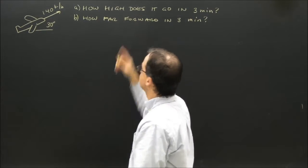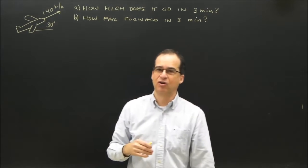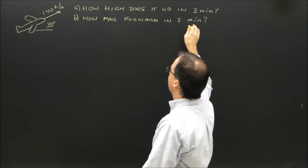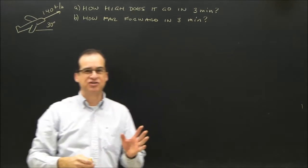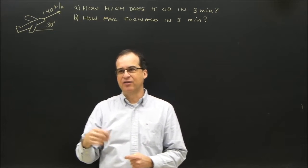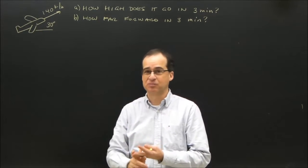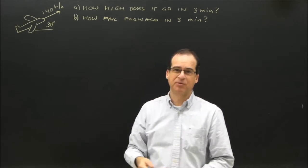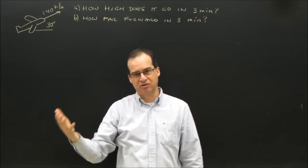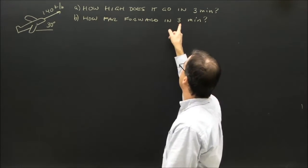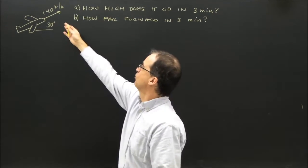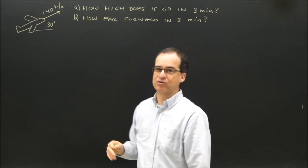The question is: how high does it go in 3 minutes, and how far forward does it go in 3 minutes? I'm already noticing I've got kilometers per hour here and minutes there. Since it's uniform motion at constant speed, we can use the formula v equals d over t. We can use kilometers per hour and get an answer in kilometers, but the time has to be in hours. So to turn minutes into hours, you divide by 60.